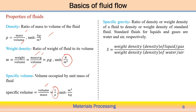Specific gravity is used when we compare a certain property by taking a reference value. It is the ratio of the density or weight density of a fluid to the density or weight density of some standard fluid. For liquid and gases, the standard fluids are water and air respectively. So specific gravity is the weight density of the liquid or gas divided by the weight density of water or air — it represents weight density relative to that of water and air.